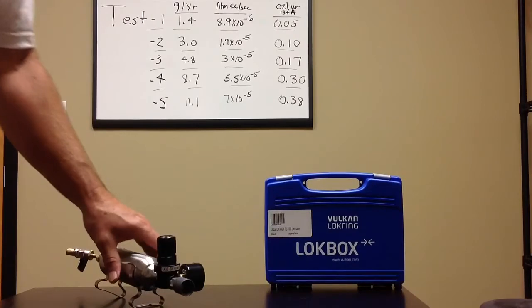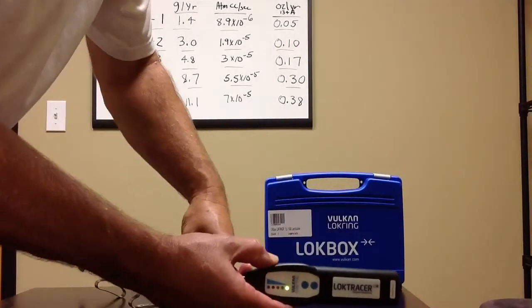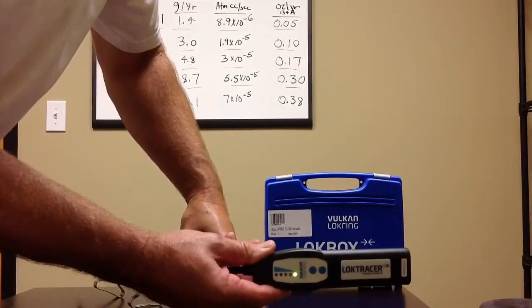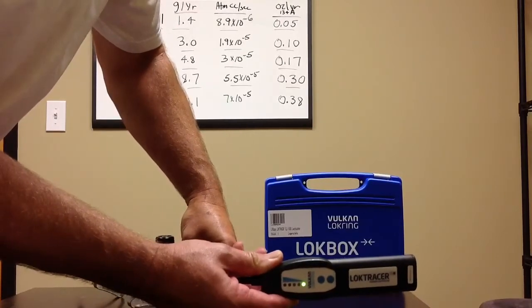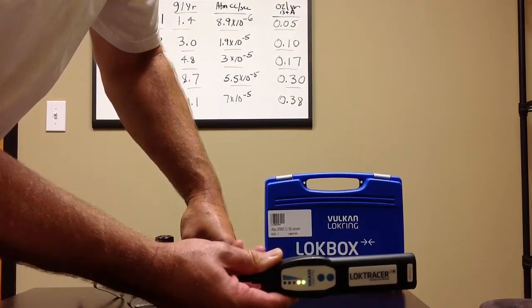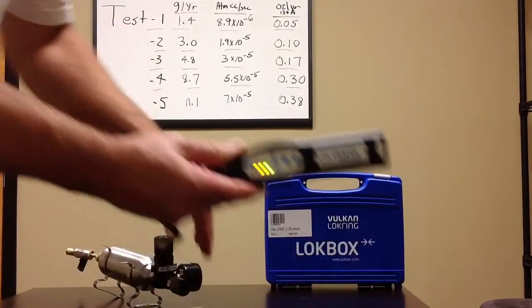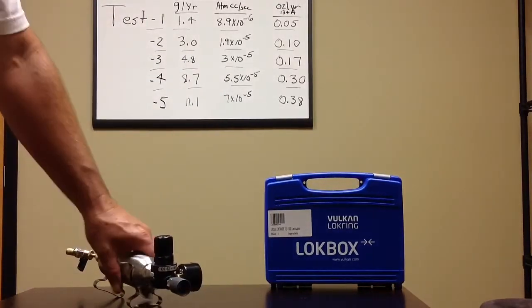Next setting will be for the 3.0 grams per year or one-tenth of an ounce of R134A. So we'll expose the leak. Okay. So it's a little bit stronger response there.